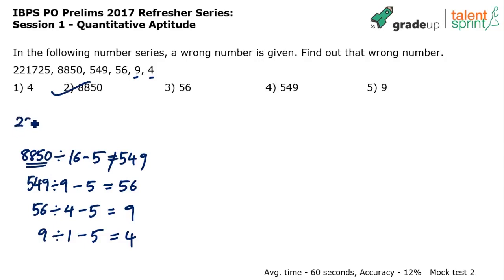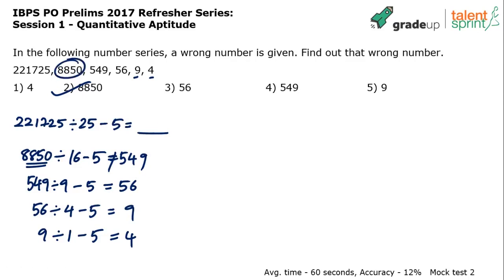221725 divided by 25 minus 5 should give you whatever that number is, but our job here is not to find the correct number — our job is to find the wrong number. The misfit here is 8850. I'm explaining it in the reverse fashion, from right to left in the series. I'll explain only the first three steps; the last three steps follow the same pattern.